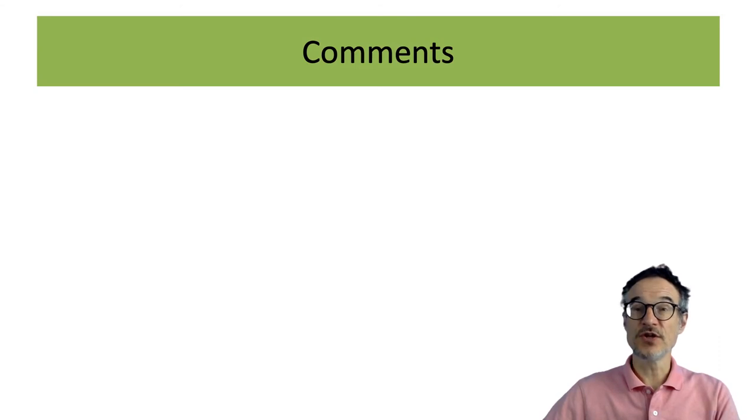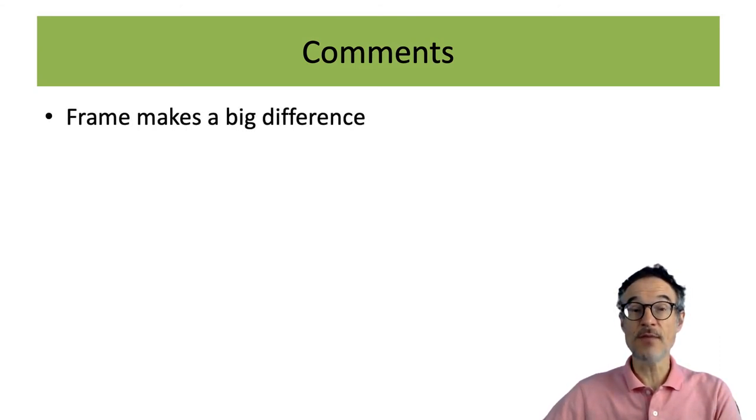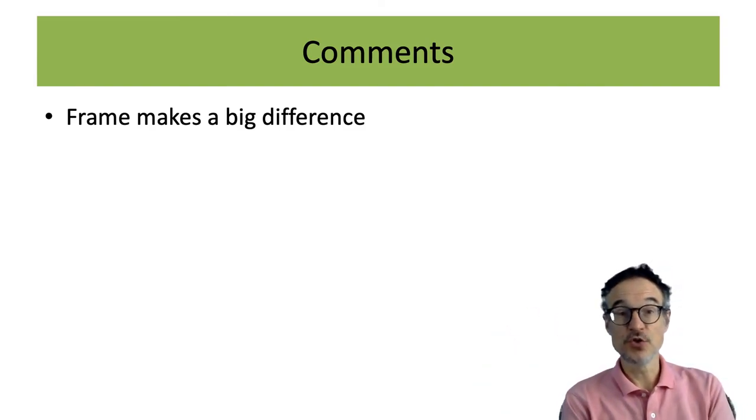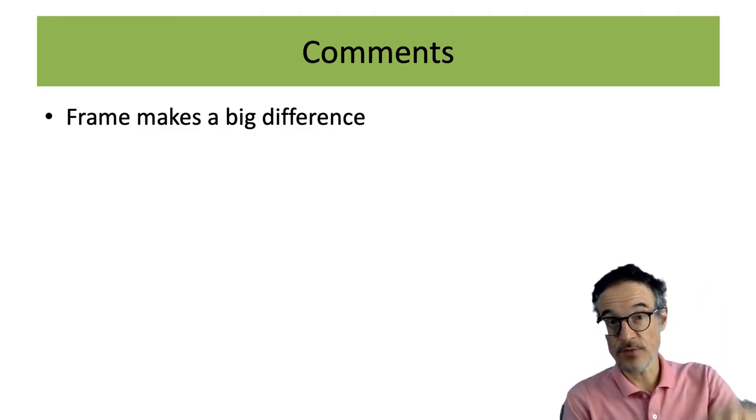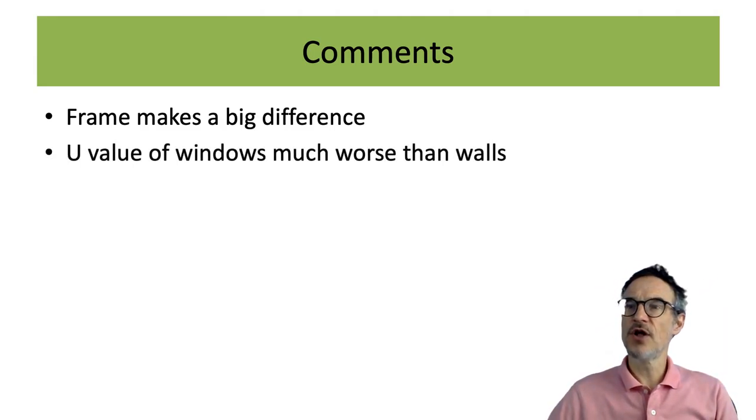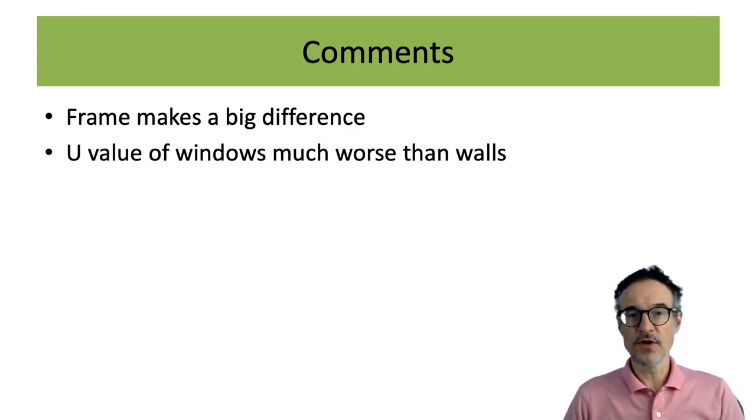A few things to notice on this: one of them is that the frame makes a big difference. So if you have a bad frame, it's going to lose a lot of heat and the performance of the windows is going to go down. And pretty much any wall that you can think of is going to have more insulation than your windows, if you put in a little bit of effort. So the U value of the windows is usually much worse than the walls, if you put serious amounts of insulation.